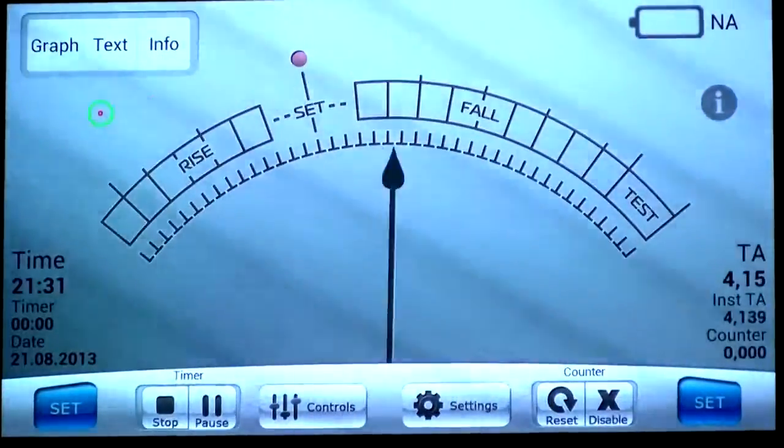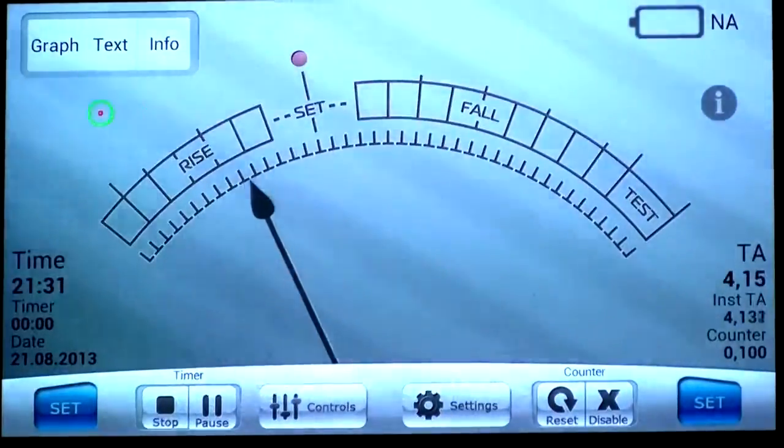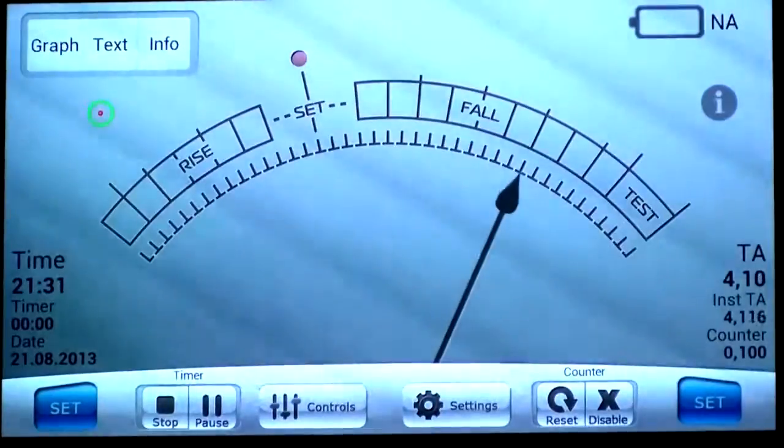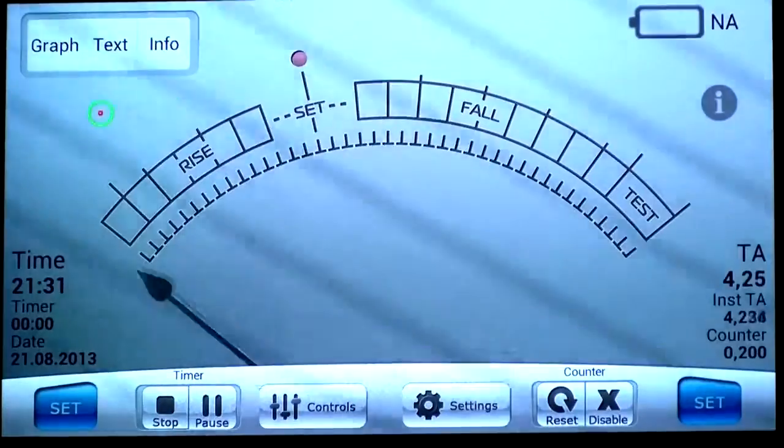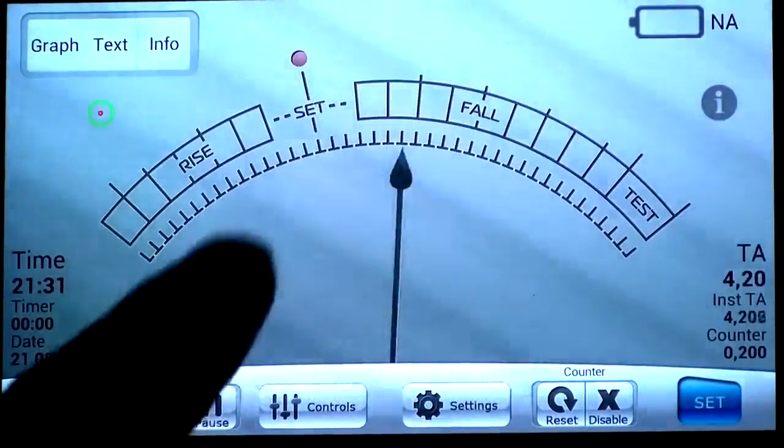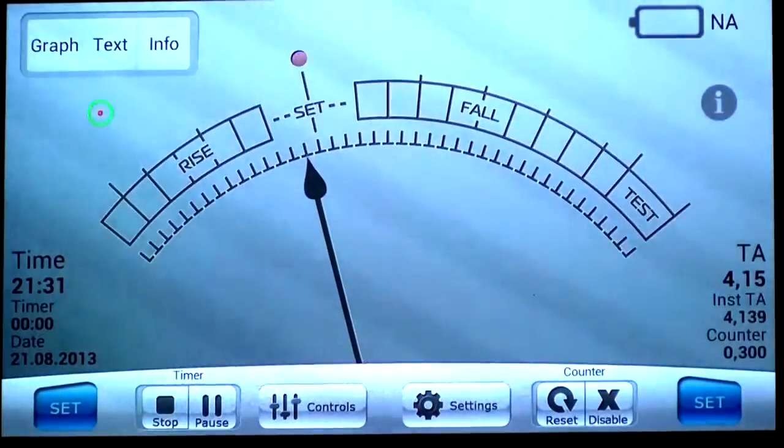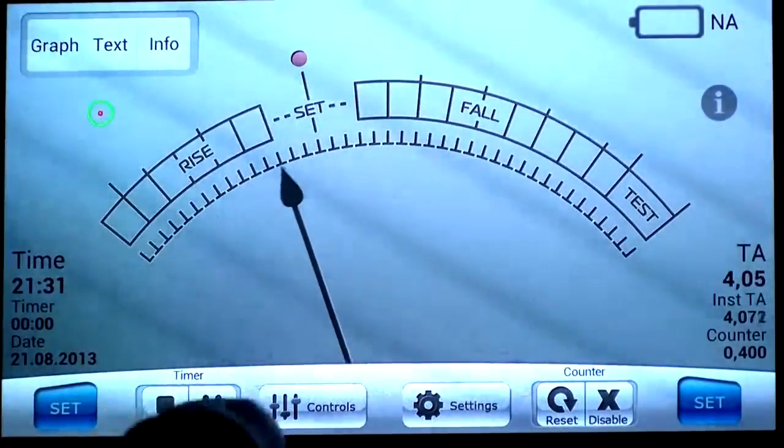Okay, it starts to work. Now the TA counter is 0.1, 0.3, 0.4.